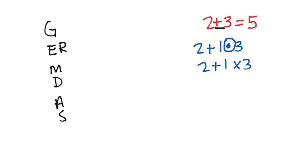Let's go back to the topic. In this case, how many operations do you have? You have 2. So I have to put them in order — I have to follow an order. And the order to follow is germ desks. So please pay attention.